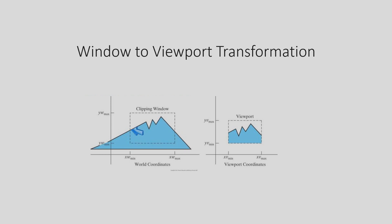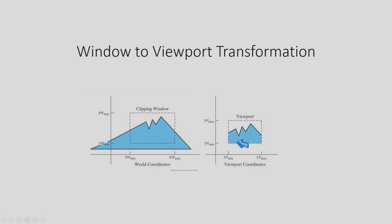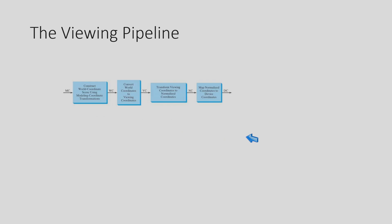So the window technically is the part of the world scene which is to be depicted on the monitor screen. But this actual window is not necessarily the size of the monitor — it may be larger or it may be smaller. Therefore, before fitting it into the viewport — the viewport is the area of the monitor screen where your window is to be depicted — we have to scale it according to the size of the window so that the clipped window exactly fits in the viewport.